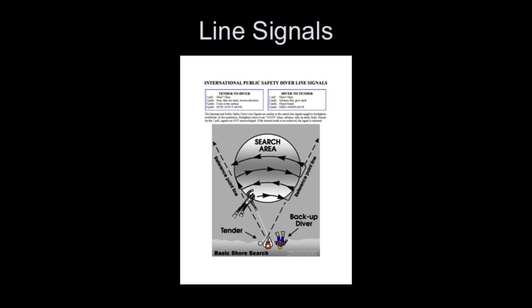Here's an example of a communications document available for download to any public safety diver from the International Association of Dive Rescue Specialists website. At the end of this presentation, we'll give you that website where all these materials will be available. This document — International Public Safety Diver Line Signals — shows an example of tender to diver and diver to tender line signals for tethered divers, including one pull, two pulls, three pulls, and four pulls.